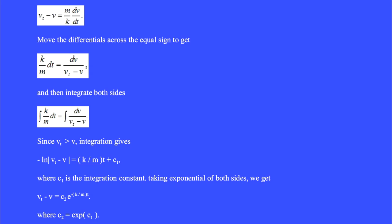where c1 is the integration constant. Taking exponentials of both sides, we get vt minus v equals c2 e to the minus k over mt, where c2 equals e to the c1.